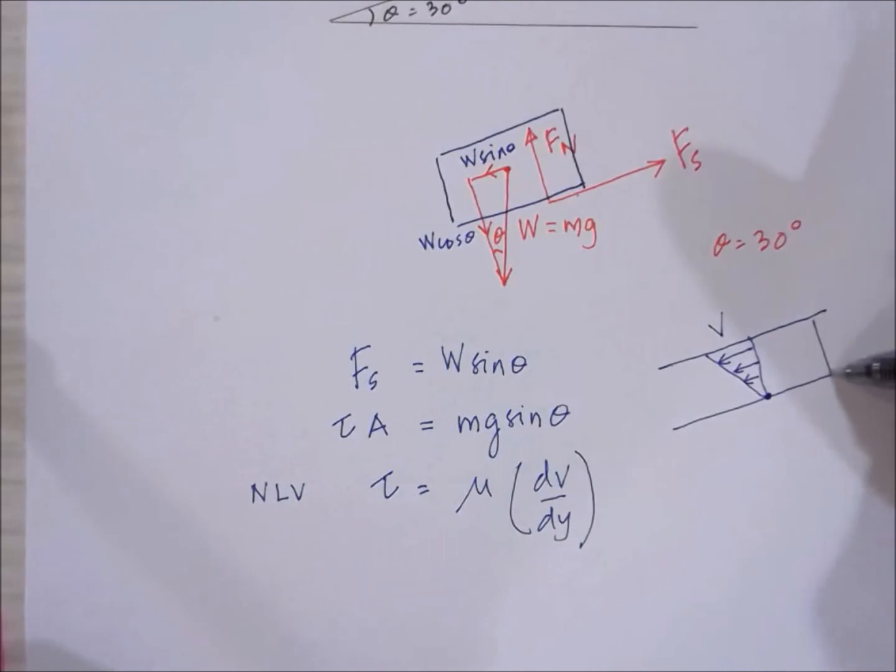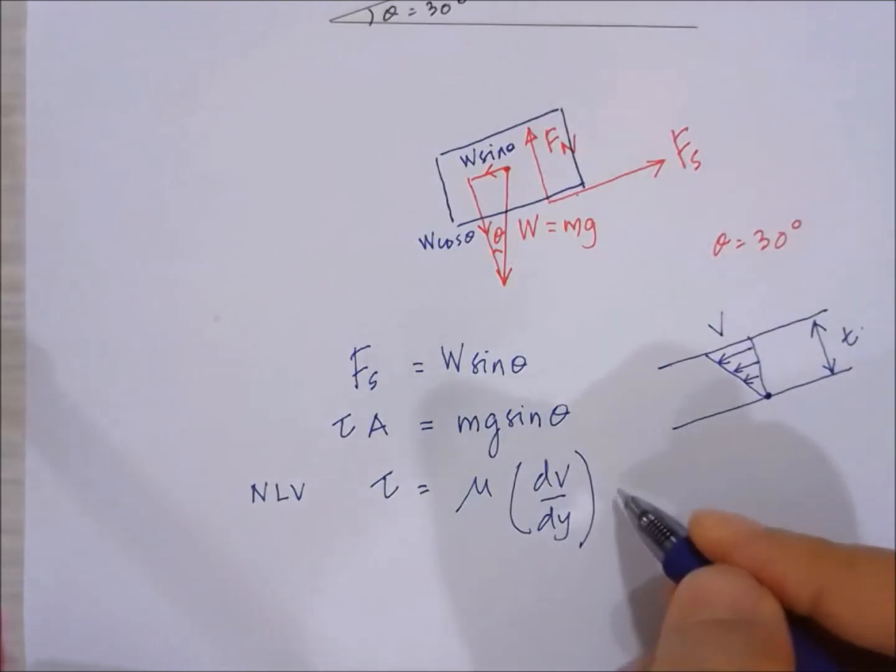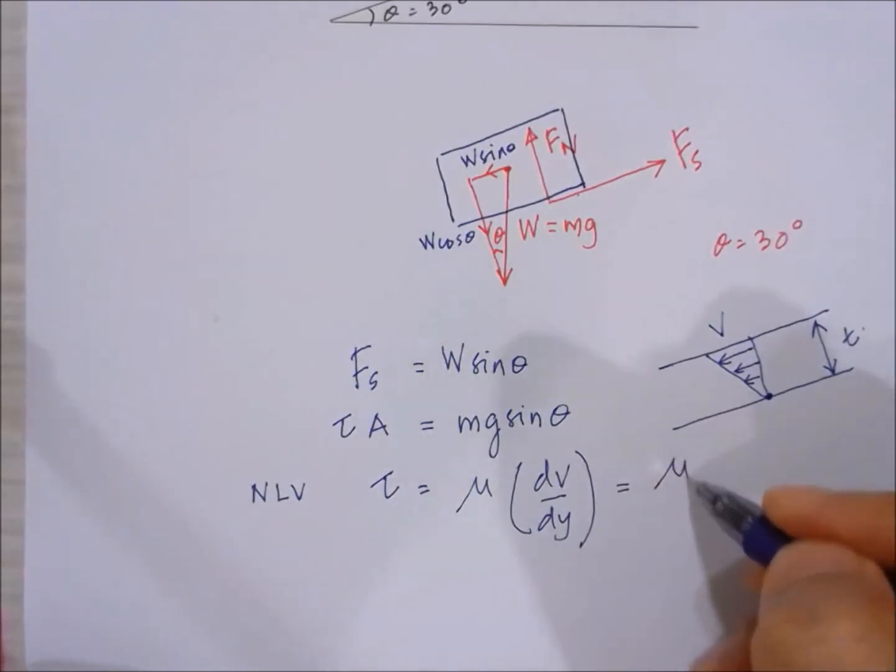And the thickness, let me just call this t. So we can see from here that since this is actually a linear profile, tau is actually equal to mu v divided by t.